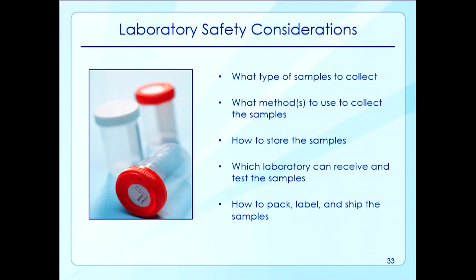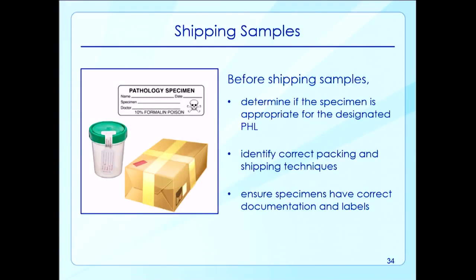Packing and shipping techniques might include refrigeration or the use of dry ice where ultra-low temperatures are needed. The importance of correct packaging and shipping cannot be overstated. For example, anthrax samples that are incorrectly packaged and shipped will be rejected, because that places laboratory personnel at very high risk for infection, which will delay public health response and impede crucial interventions. Before shipping samples, staff should determine if the specimen is appropriate for the designated public health lab, identify the correct packing and shipping techniques, and ensure that specimens have correct documentation and labels.